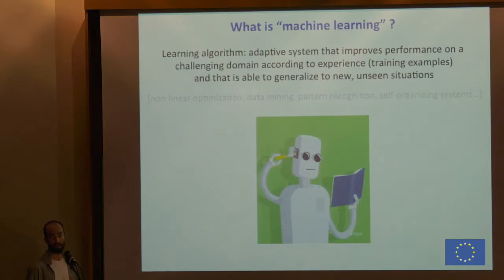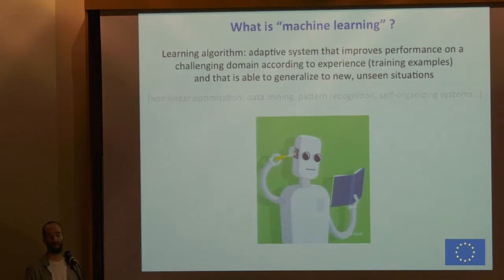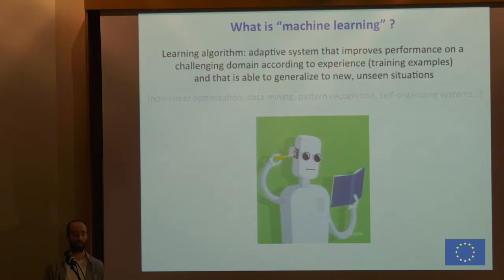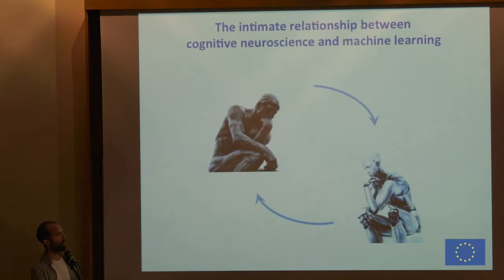Why are we interested in machine learning as cognitive neuroscientists? Machine learning systems are adaptive systems that can improve performance based on experience — they learn and change their own structure. This is exactly what is believed to be the root of learning and memory in biological agents. Machine learning is also concerned with nonlinear optimization, data mining, pattern recognition, and self-organization in complex systems. But it's very important for cognitive neuroscience because it provides a way to study the physical processes which can give rise to complex cognitive abilities — what we define as thought.